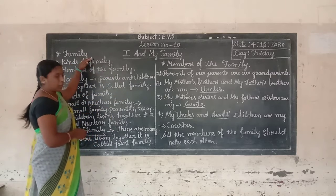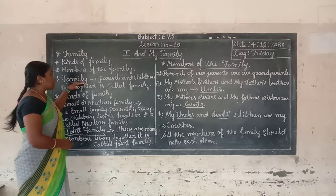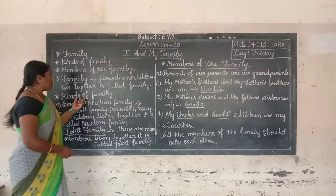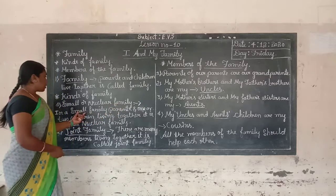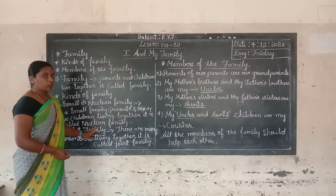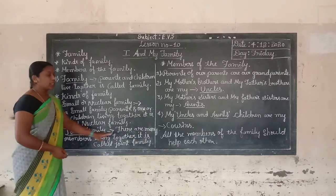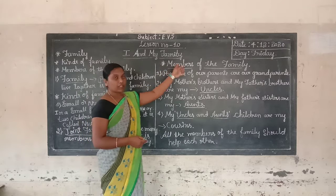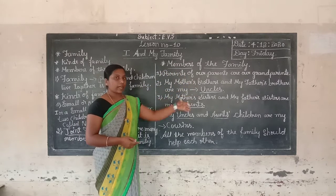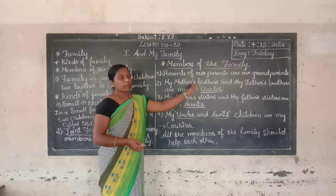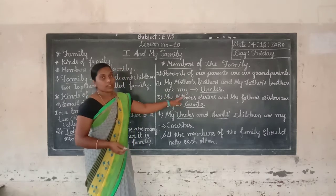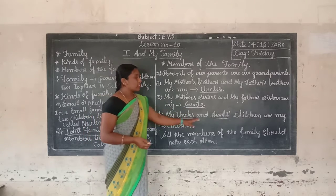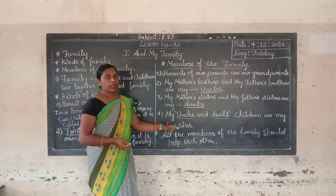Today we discussed family, kinds of family, and members of the family. Family means parents and children live together. There are two kinds: nuclear family, where parents and one or two children live together; and joint family, where many members live together. Parents of our parents are our grandparents. My mother's brothers and father's brothers are our uncles. My mother's sisters and father's sisters are our aunts. My uncles' and aunts' children are my cousins. I hope you understood this topic.